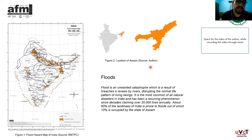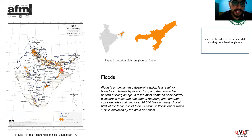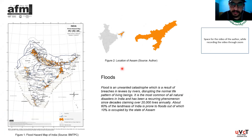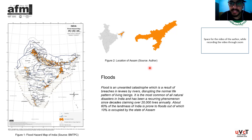My first slide has the Indian flood hazard map where the shaded area depicts the area liable to flood. Flood is an unwanted catastrophe resulting from breaches in levees by rivers, disrupting the normal life pattern of human beings. In India, floods are the most common natural disaster with 60% of landmass prone to floods, claiming around 20,000 lives annually. Out of this 60% landmass, 10% is occupied by the north-eastern state of Assam.